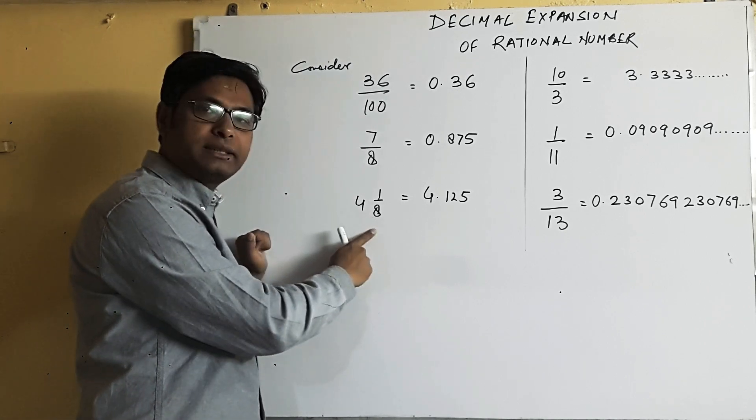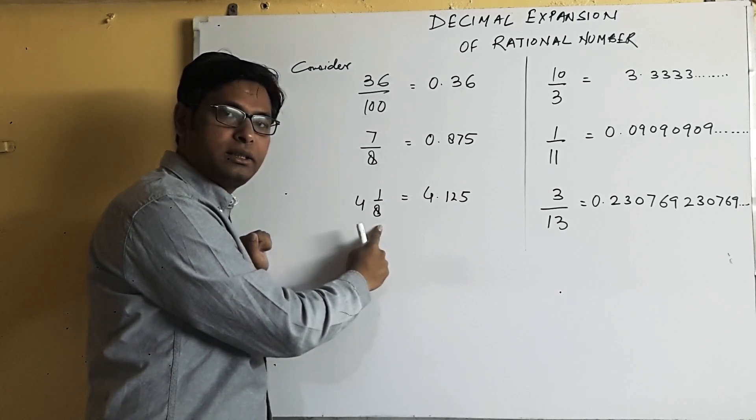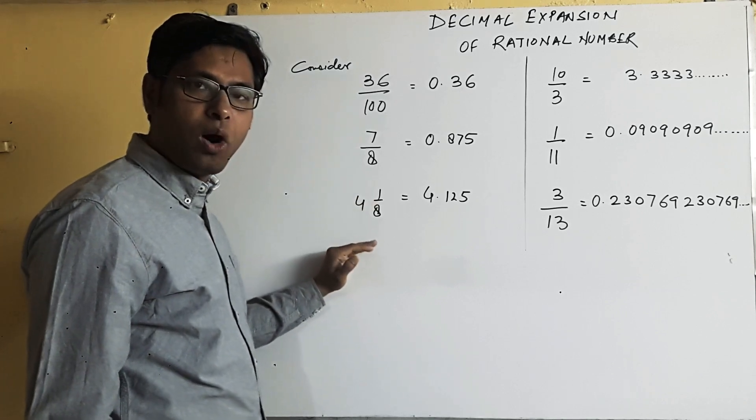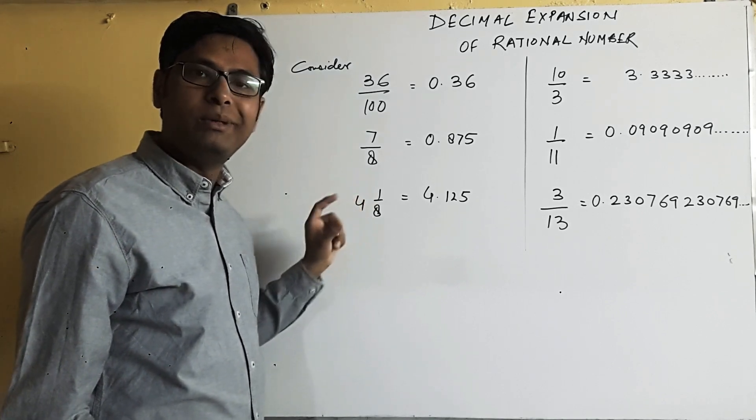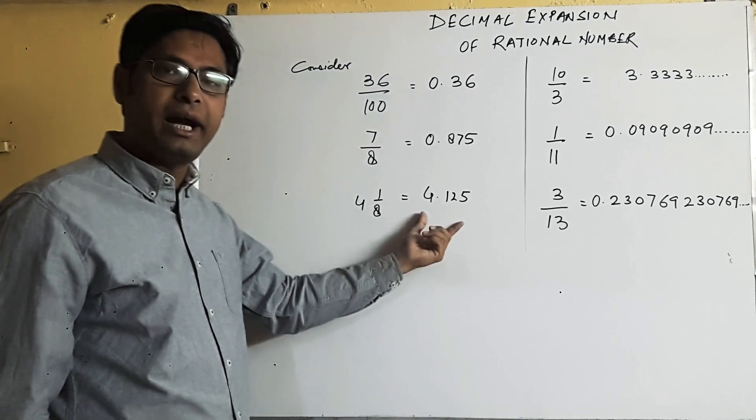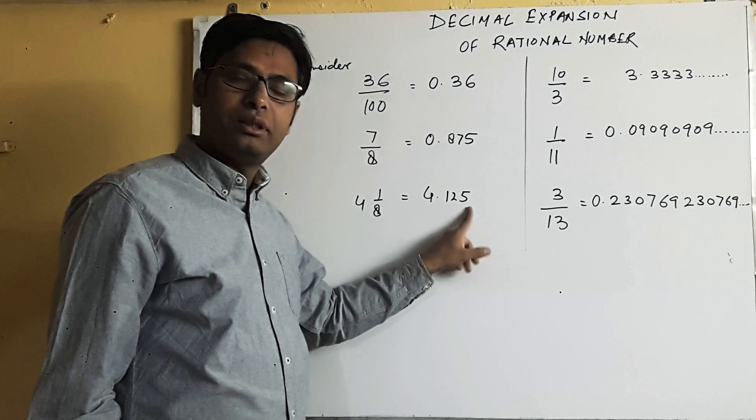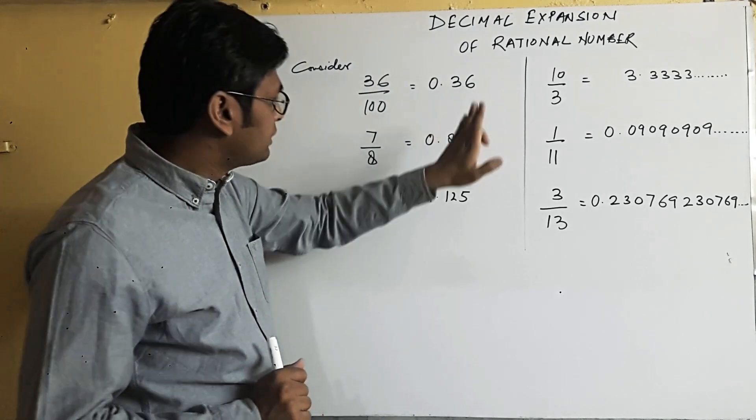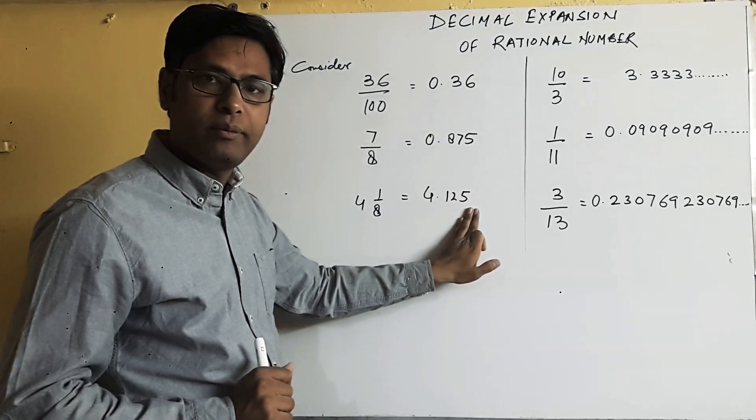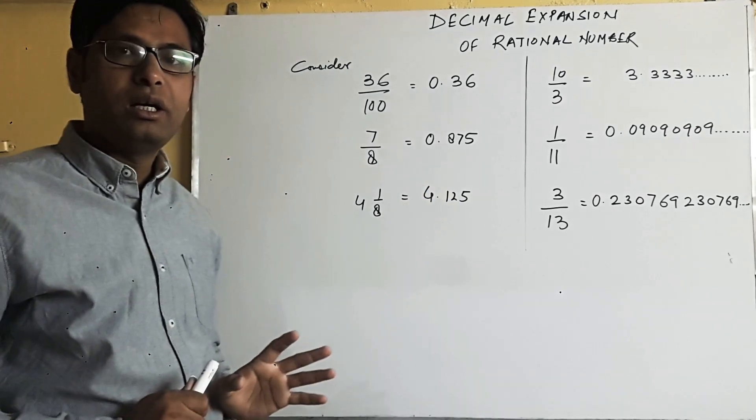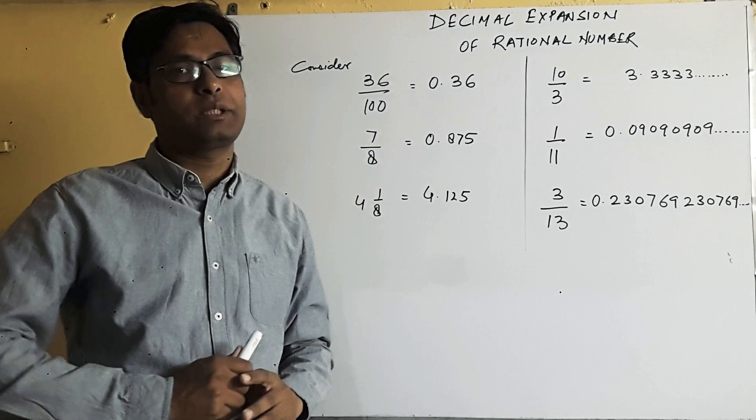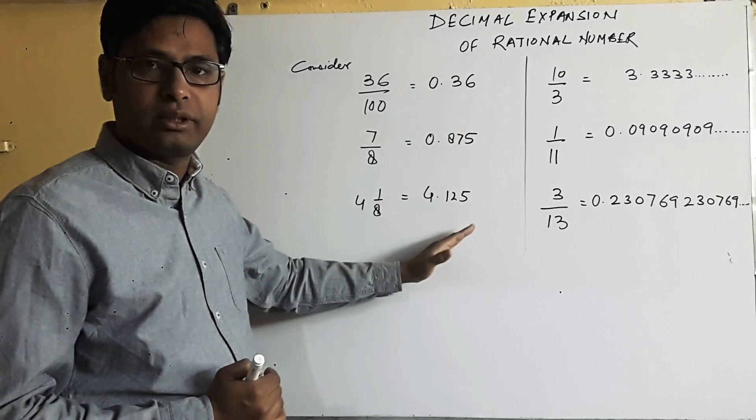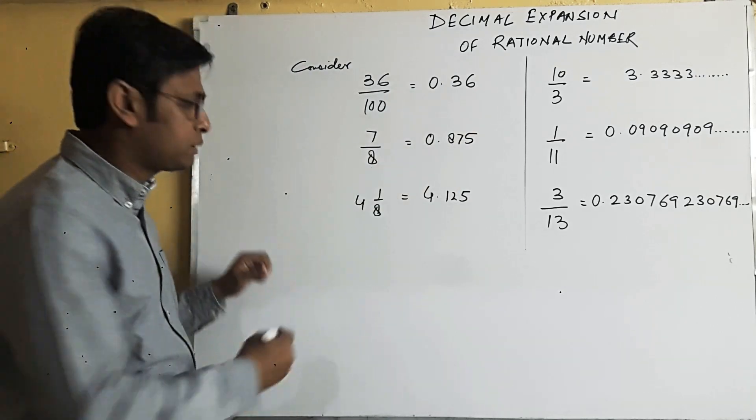Take one more example, 4 whole 1 upon 8. Convert into improper form and similarly, the numerator will be divided by denominator and the answer you will get is 4.125. This comes to an end, the remainder will come 0. You can see that all of these come to an end. This type of decimal expansion are called terminating decimal expansion because it's terminating at a point, it comes to an end at a point.